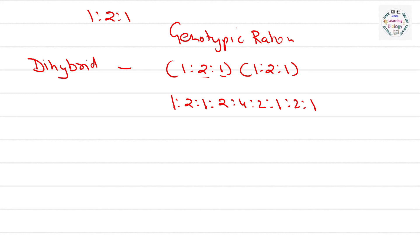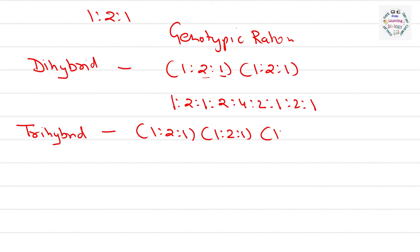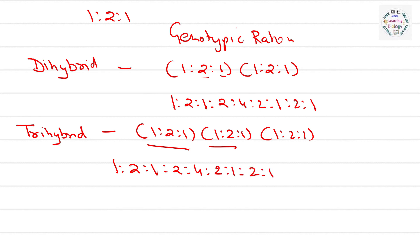Same way, if you are going to solve for trihybrid cross, it is easy: 1:2:1 multiplied by 1:2:1 multiplied by 1:2:1. We have just solved the first two, giving 1:2:1:2:4:2:1:2:1. Now multiply this result by 1:2:1.